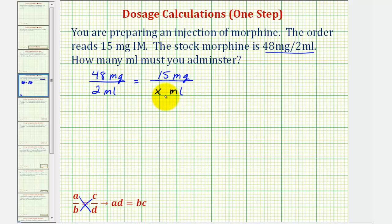Before we cross-multiply, notice how the units on top are both milligrams, and the units on the bottom are both milliliters. We do have to have common units before we cross-multiply. Now when we cross-multiply to form our equation, we will leave off the units. So we'll have 48 times X must equal two times 15.